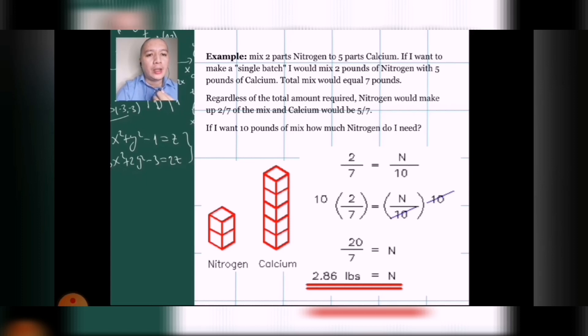So, here is an example of a solution already provided to this problem. We can see that the nitrogen is 2 sevenths while calcium is 5 sevenths. In this method, we can see that the first fraction is 2 over 7 while the second one is N over 10. The reason it is N because we are trying to find out the total number of nitrogen that is needed in a batch or mix of 10. So, we multiply 2 by 10 and then we multiply 7 by N. So, 2 times 10 is equals to 20 and then 7 by N is going to be just 7N. I'll show you in the next example how did that happen. So, we will cancel that 20 divided by 7 is 2.86.